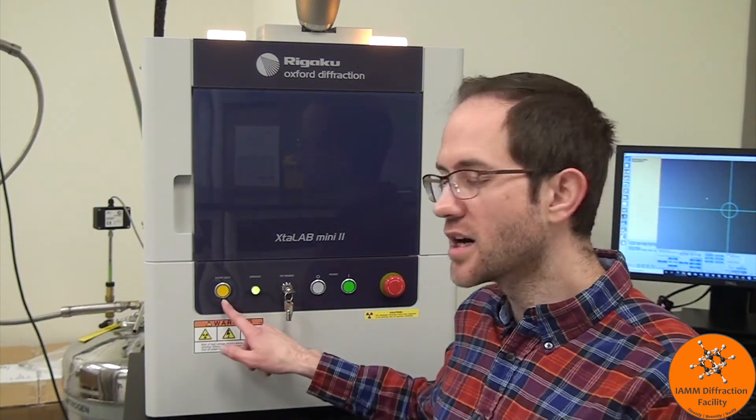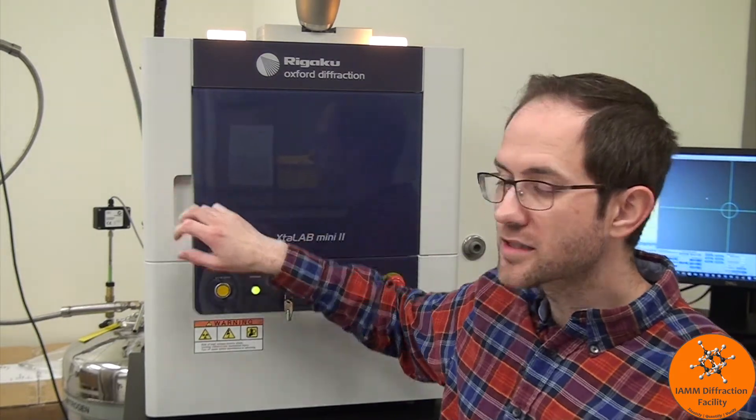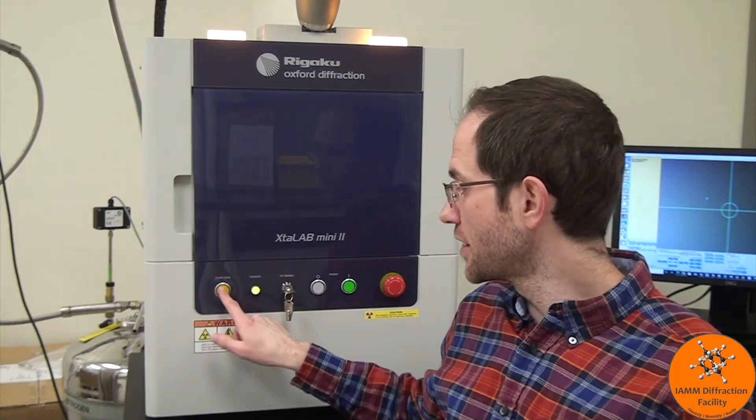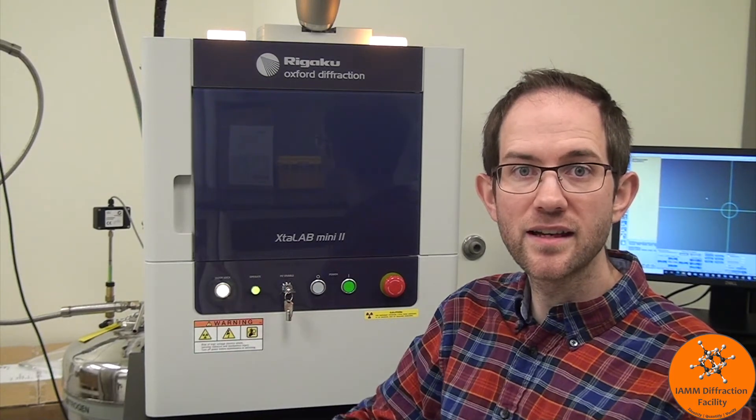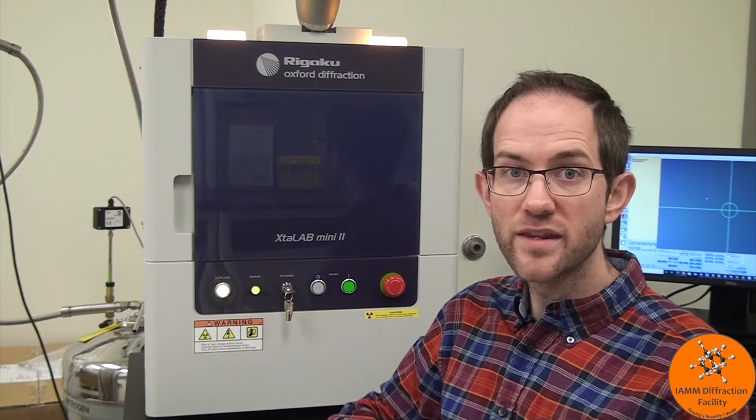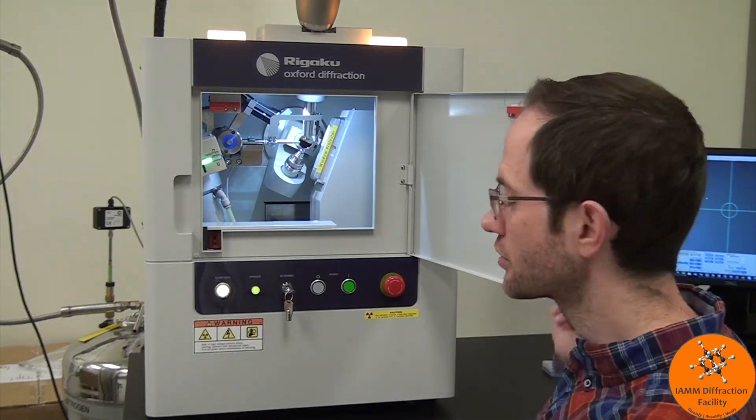Before we begin though, let me point out this door lock button. When it is off, that means that the door is locked, but as soon as I press the button, it turns solid yellow and then it begins blinking and making a beeping sound. When that happens, I am able to open up the door and now we can take a look inside at some of the hardware.